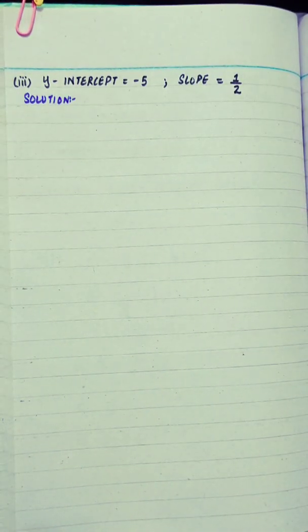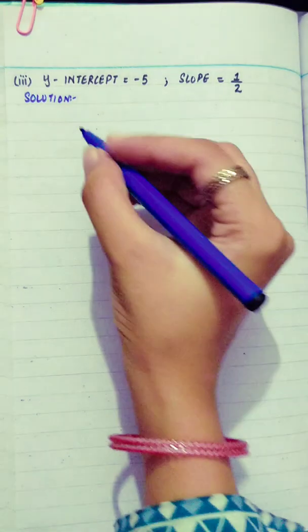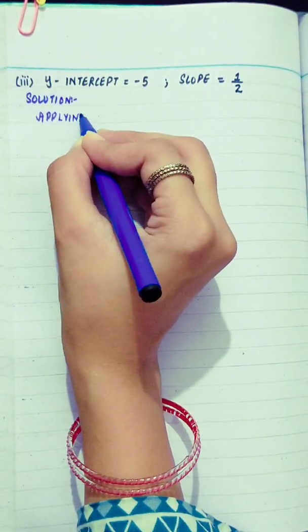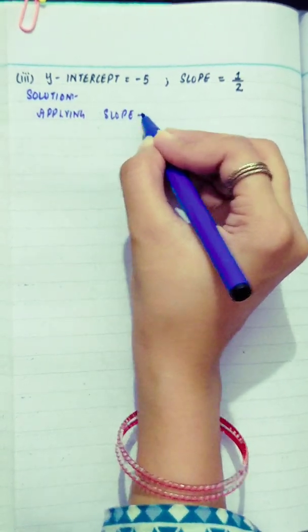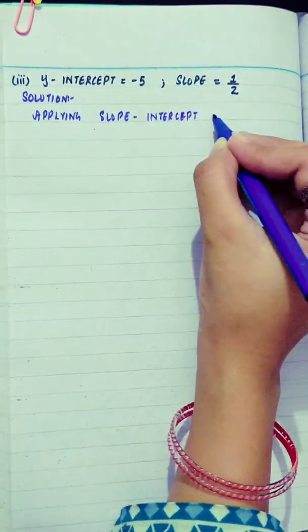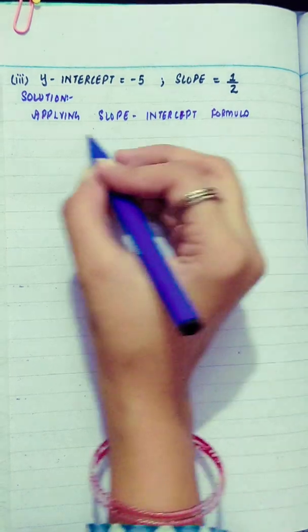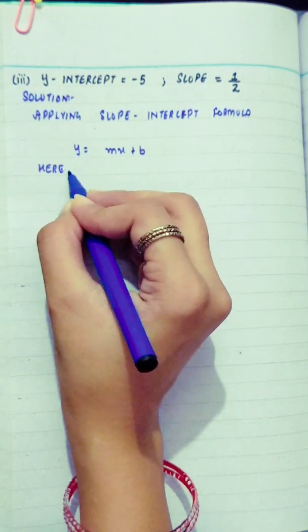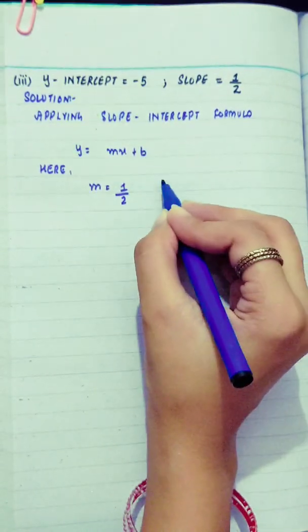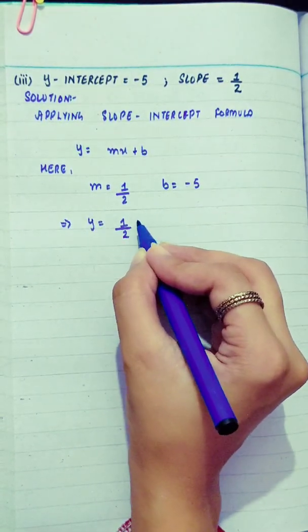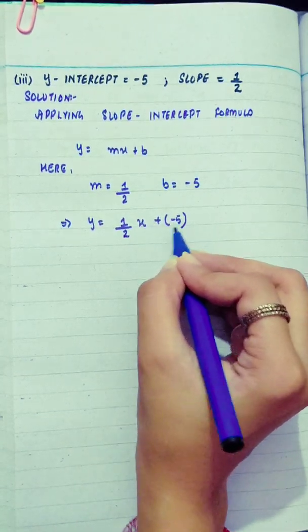Part 3: y-intercept equals minus 5 and slope equals 1 by 2. Applying the slope-intercept formula: y equals mx plus b. Here m equals 1 by 2 and b equals minus 5. So y equals half times x plus minus 5.